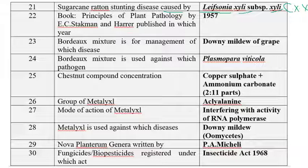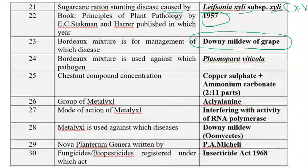The book Principles of Plant Pathology by E.C. Stakman and Harrar was published in the year 1957. Bordeaux mixture is used for the management of grapes downy mildew, which was developed by Millardet in the year 1882. The pathogen responsible for downy mildew is Plasmopara viticola, and Bordeaux mixture is used against Plasmopara viticola.